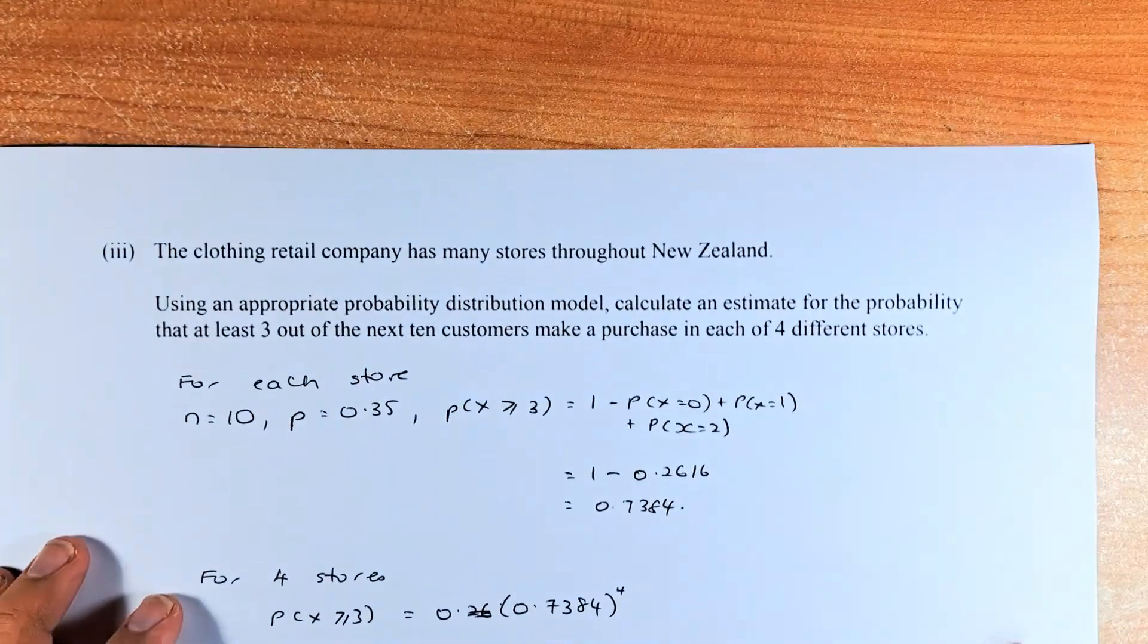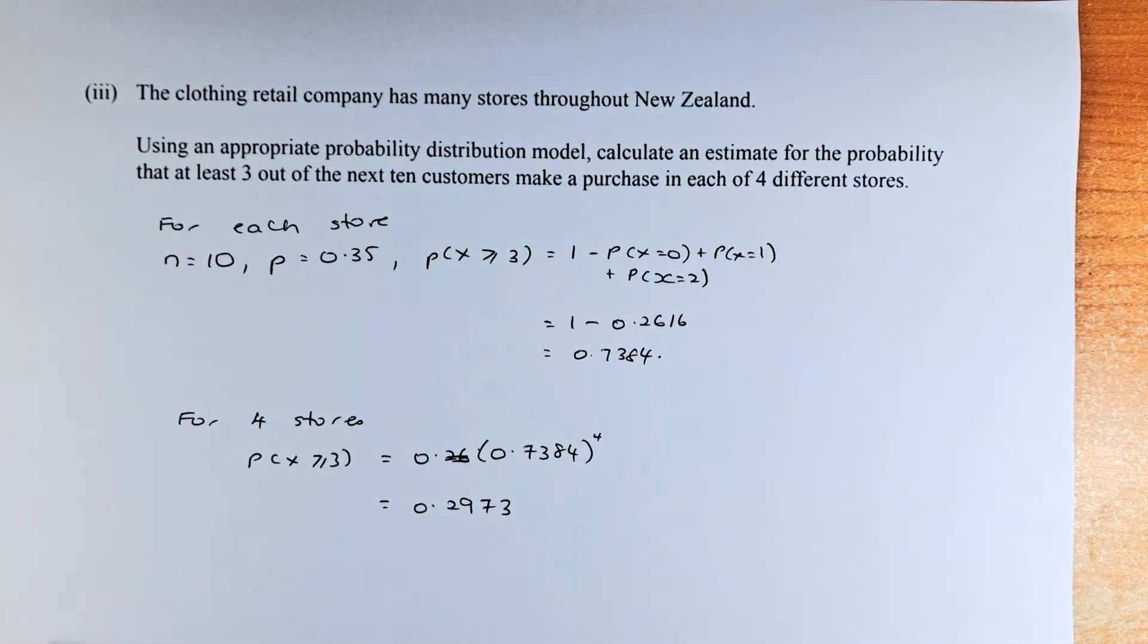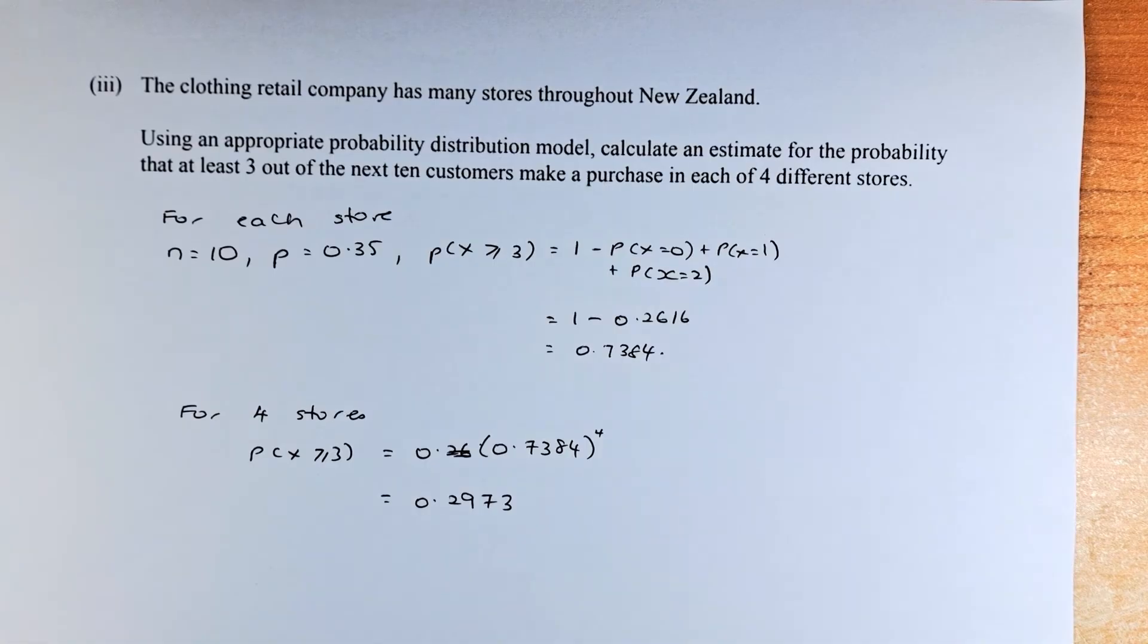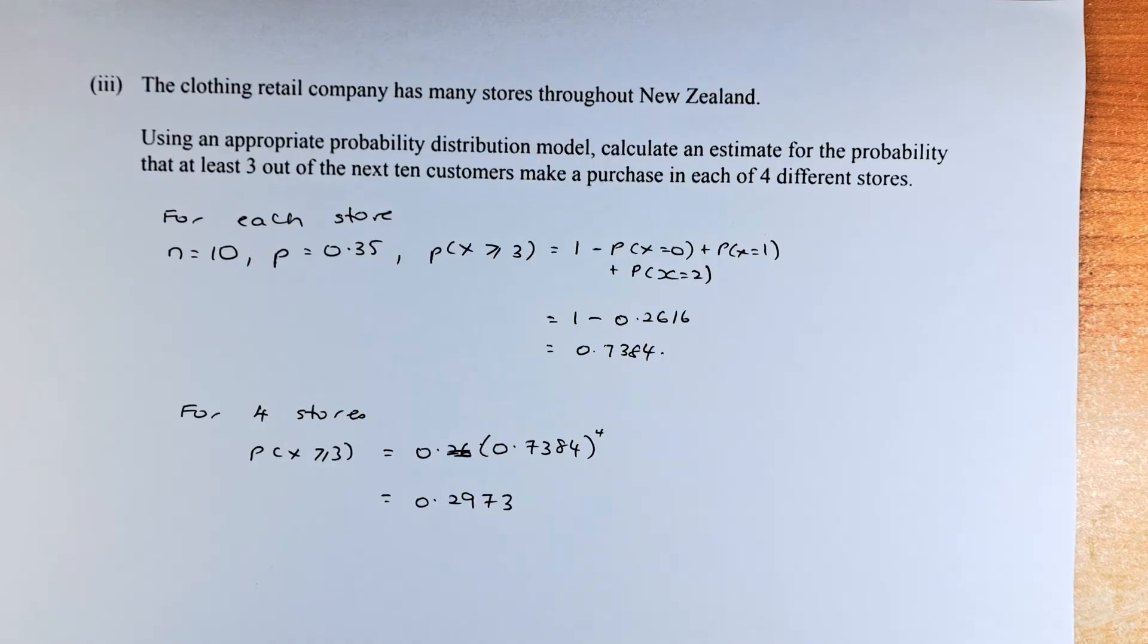Now we shall proceed to question part 3. Part 3 is the same as part 1 but slightly different. The clothing retail company has many stores throughout New Zealand. Using an appropriate probability distribution model, calculate the estimate for probability that at least 3 of the next 10 customers make a purchase in 4 different stores.